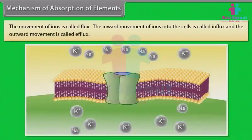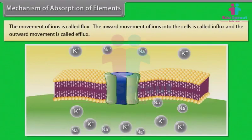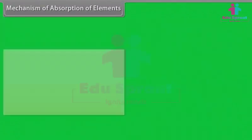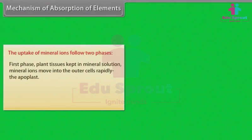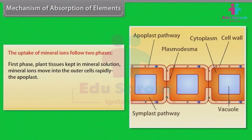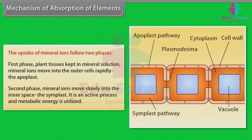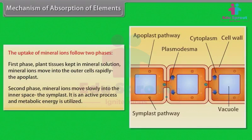The movement of ions is called flux. The inward movement of ions into cells is called influx, and the outward movement is called efflux. The uptake of mineral ions follows two phases. First phase: plant tissues in mineral solution allow mineral ions to move into outer cells rapidly — the apoplast. Second phase: mineral ions move slowly into the inner space — the symplast. It is an active process and metabolic energy is utilized.